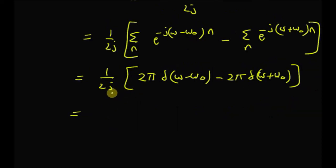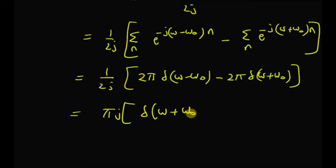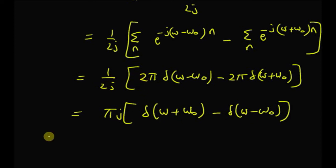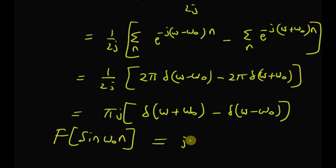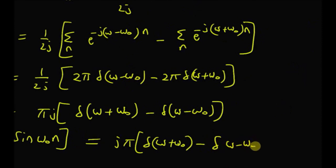Cancelling the 2's and writing 1/j as −j, we get −j·π·[δ(ω−ω₀) − δ(ω+ω₀)], which simplifies to jπ·[δ(ω+ω₀) − δ(ω−ω₀)], since −j·(−1) = +j and −j·(1) = −j. Therefore, the DTFT of sin(ω₀n) is equal to jπ·[δ(ω+ω₀) − δ(ω−ω₀)].